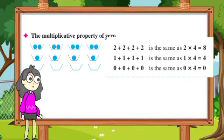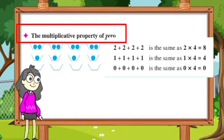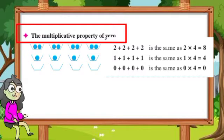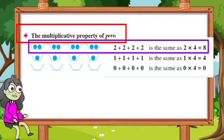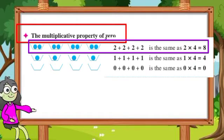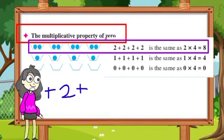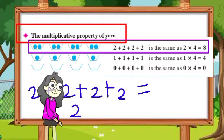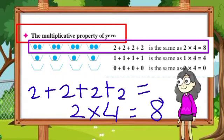Let's learn about a second property of multiplication: the multiplicative property of 0. Shunyacha gunaakar gundharma apan abhyas karna. Dileli chitra maade paha. Pahilya rangat pratyek aakara maade 2 dots dilelyat - apan ball samjuya. Ase 4 akar aahet. Pratyek ki 2 dots. Mhanjej 2 plus 2 plus 2 plus 2 is the same as 2 multiplied by 4 is equal to 8.